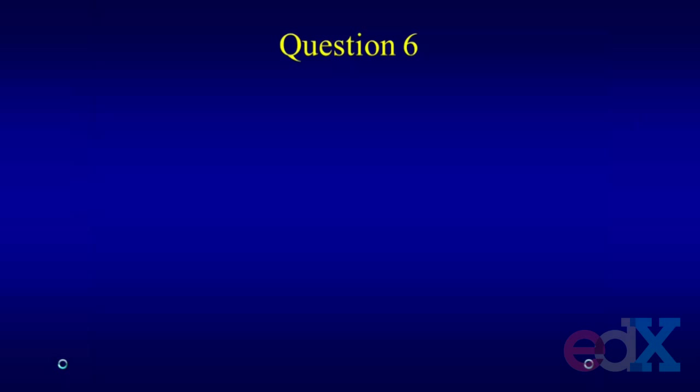Let's go on to the last question, question six. Based on the results of this paper, should we recommend that all adults drink moderately? If you look at dietary guidelines for any country or governmental body — the WHO or the U.S. dietary guidelines — very rarely will you see guidelines suggesting everybody should drink. There are some cases where they actively recommended drinking in moderation, mostly because of the strong inverse association seen for diseases like diabetes and heart disease. But there are many complicated ethical issues around recommending everyone drink: alcohol abuse, religious reasons, cultural reasons, and genetic reasons.